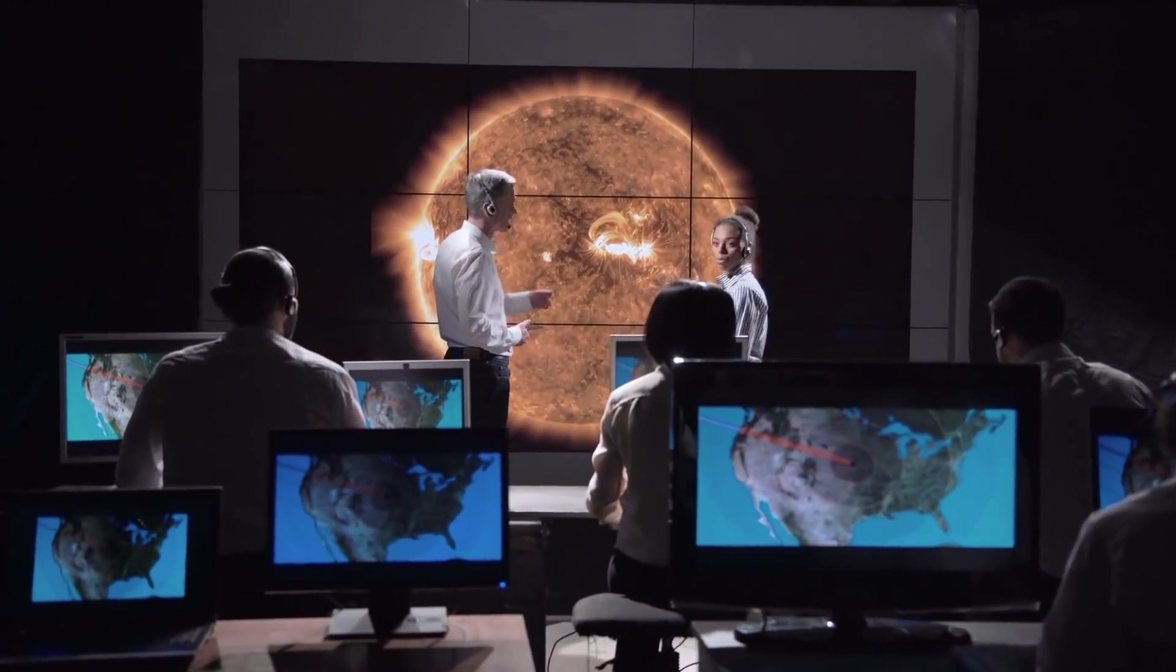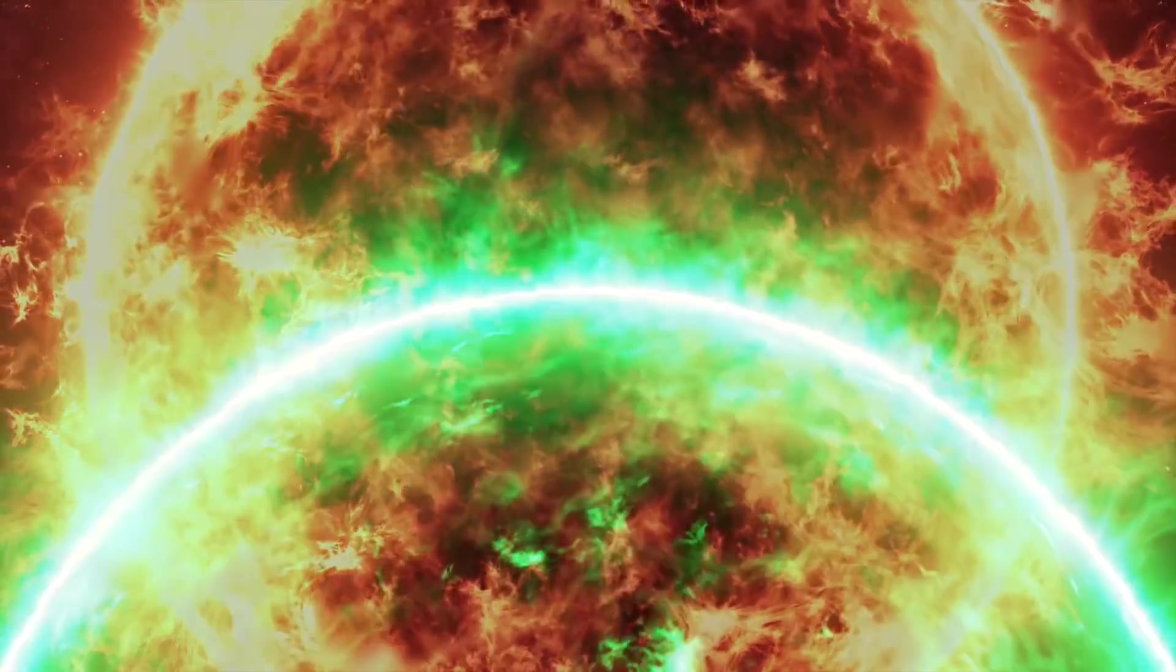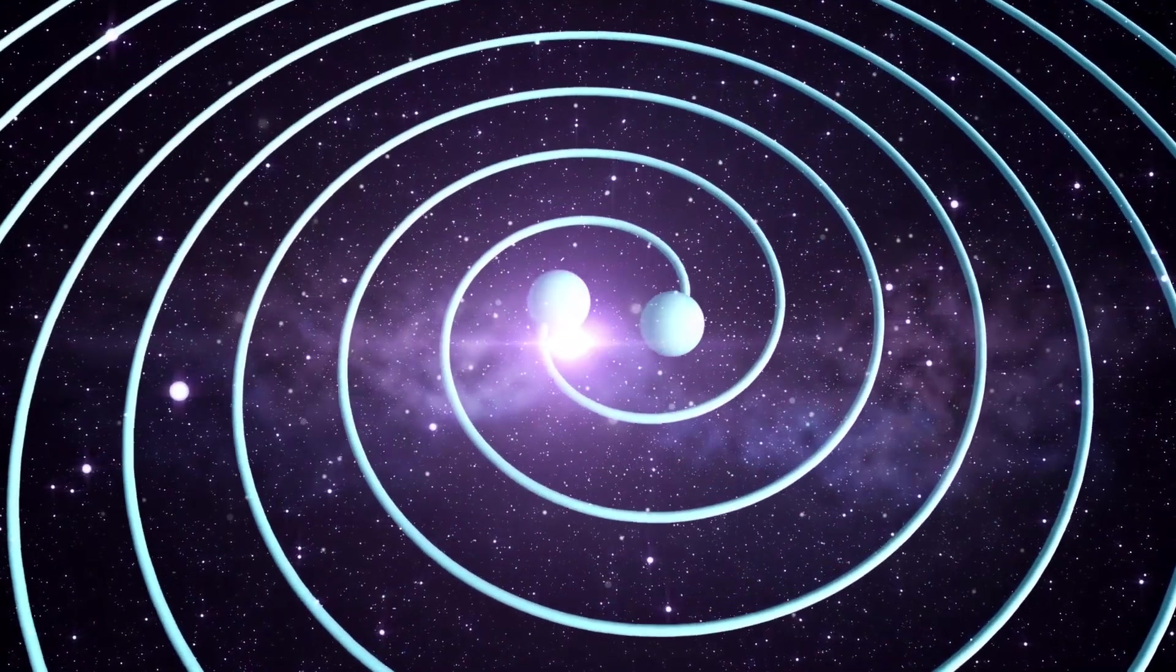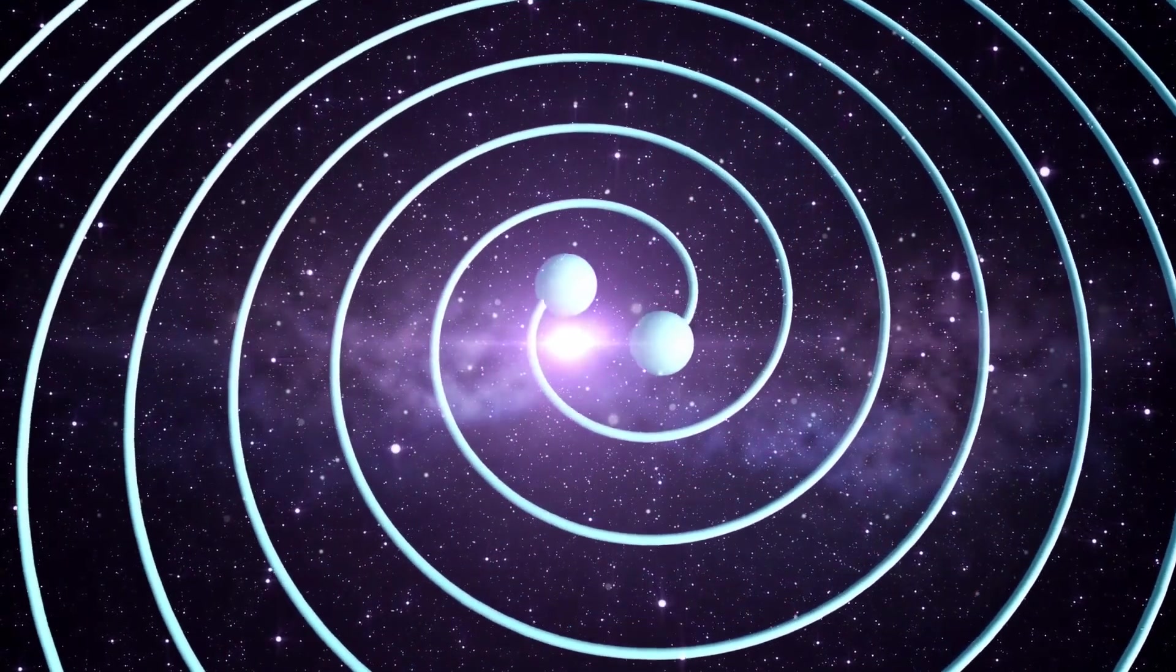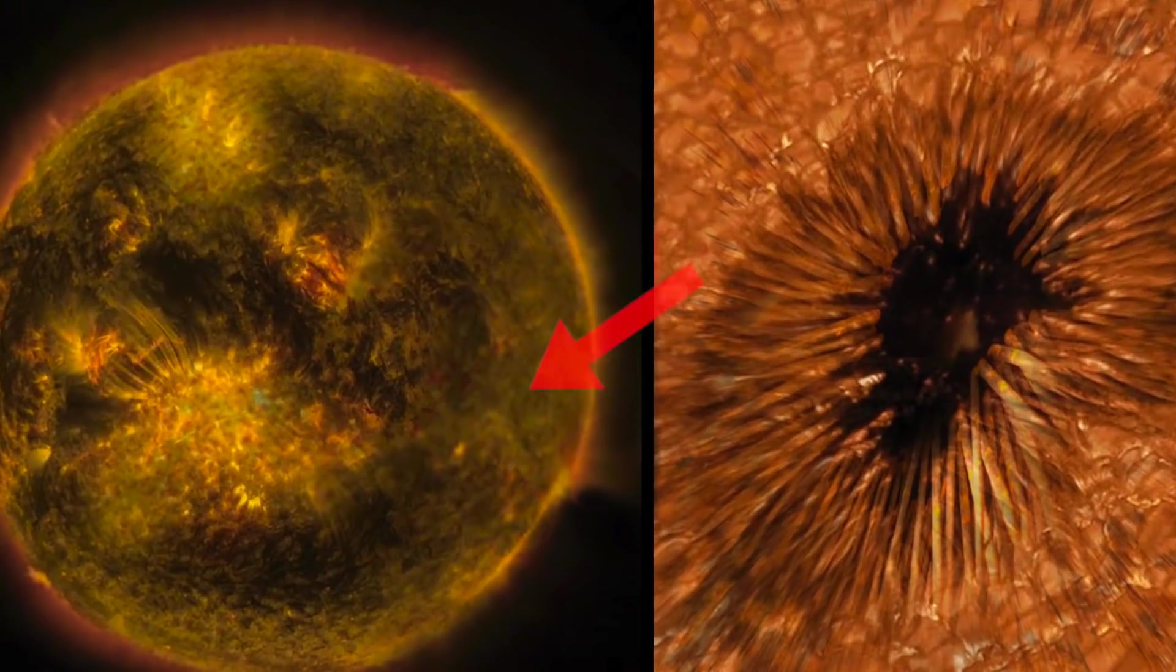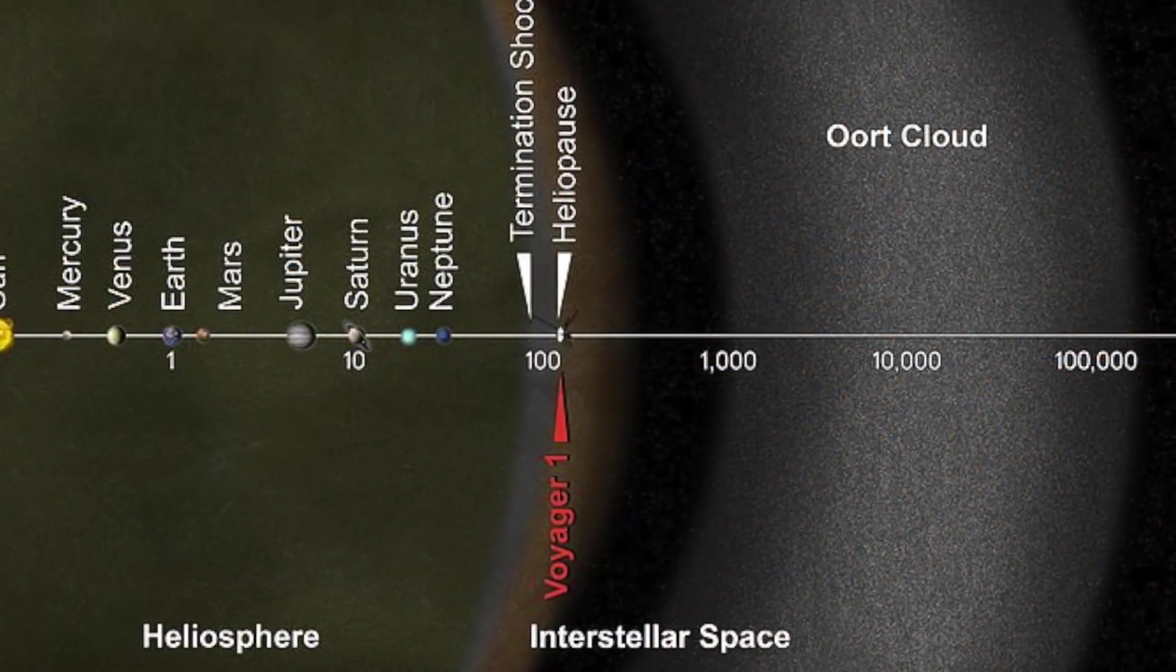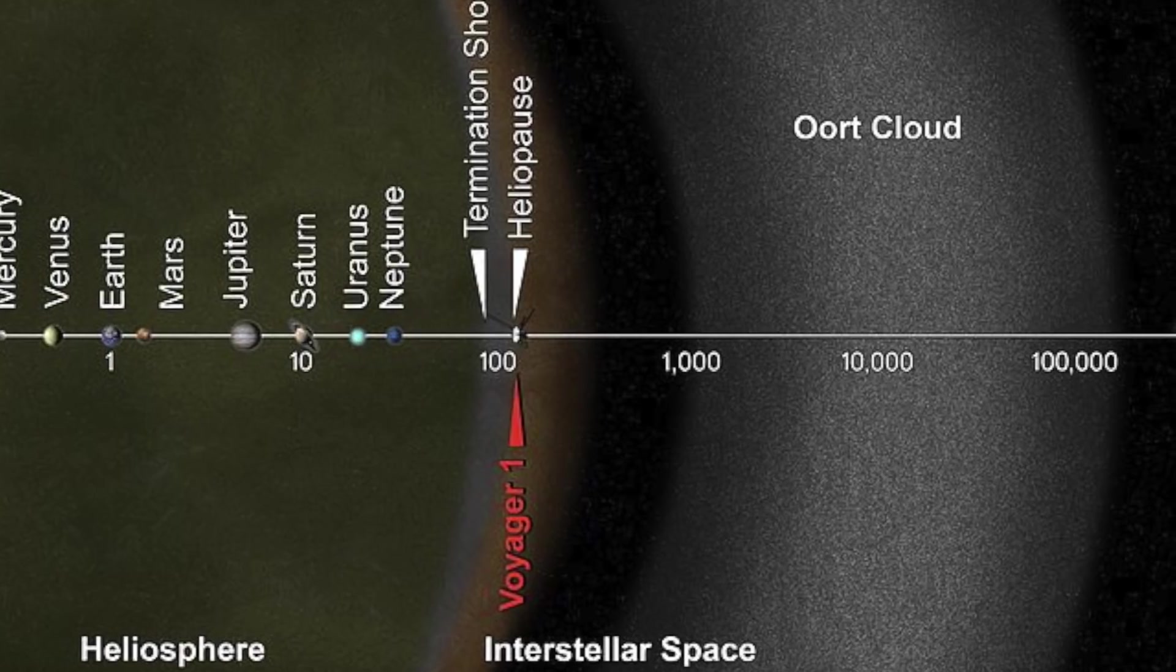In trying to explain how this happened, a pair of scientists proposed that the Sun has a long-lost twin, and that the two stars spent their early days accumulating these items from interstellar space. If the Sun does have a twin, it separated from its orbit with the Sun long ago and ended up in a totally different part of the Milky Way.